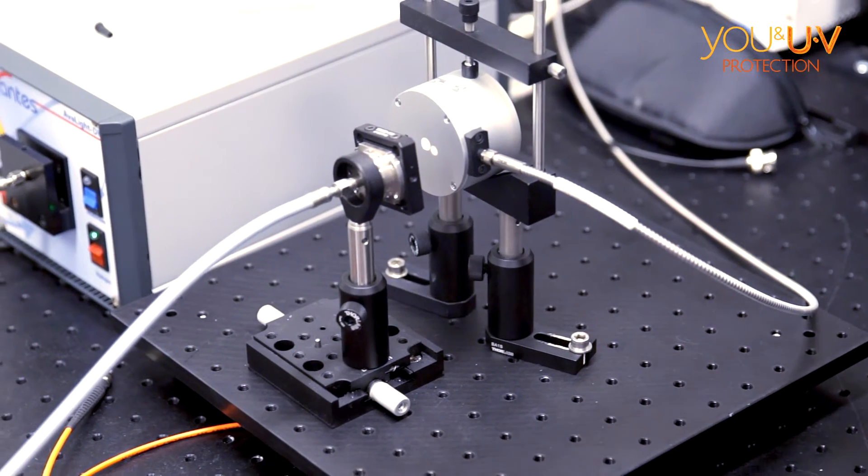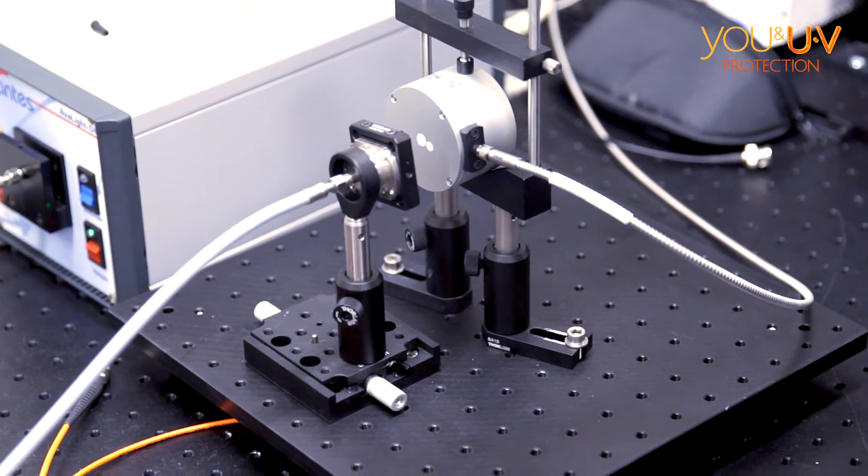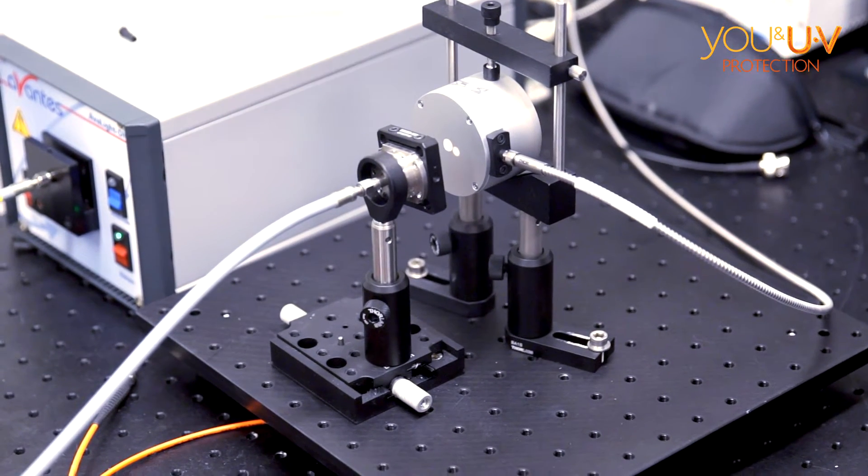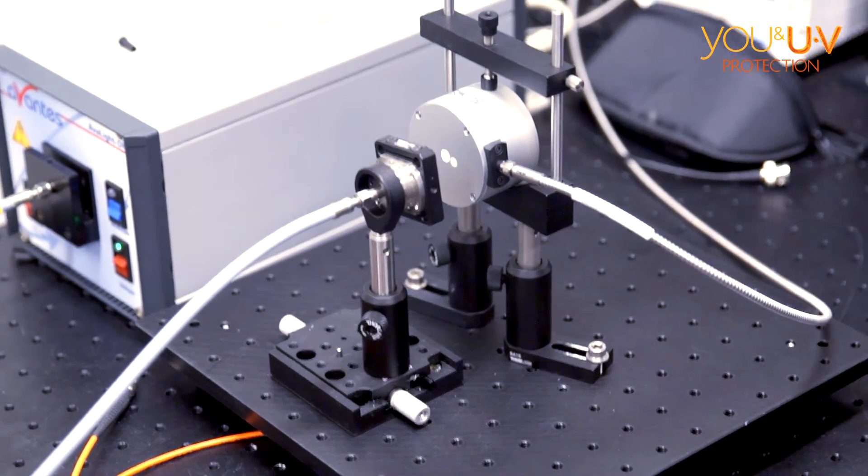This hole is called an integrating sphere. Inside it's completely white, and it reflects everything. In the UV it reflects a lot, but they're not perfect reflections, but it doesn't matter because you do a reference.